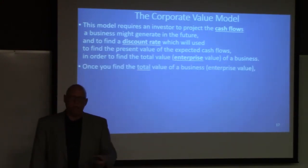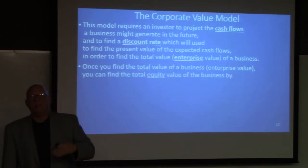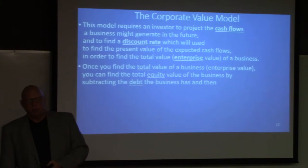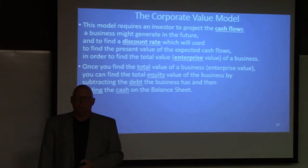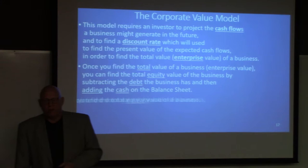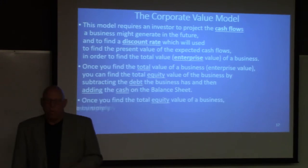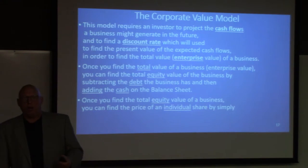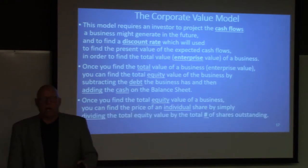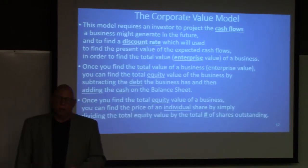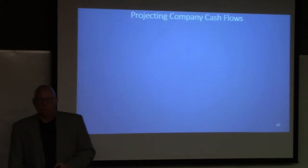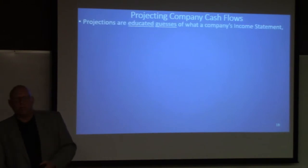Once we find the total value or enterprise value, we can find the total equity value by subtracting out debt and adding cash on the balance sheet. Once we find the total equity value of a business, we can find the price of an individual share of equity by simply dividing total equity value by the number of shares outstanding. And that's what we're going to do. So let's project cash flows.